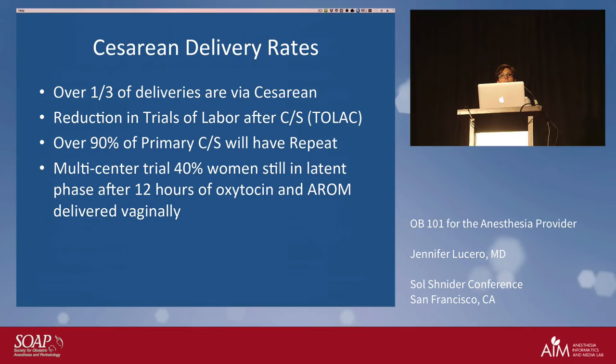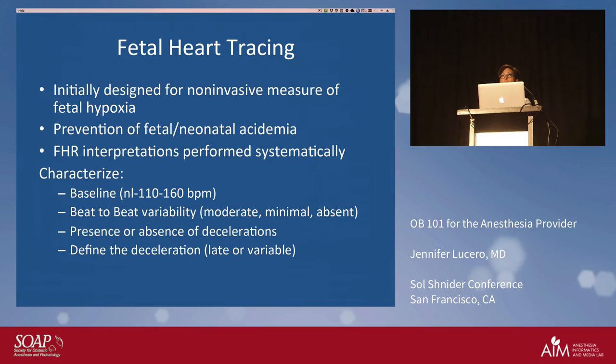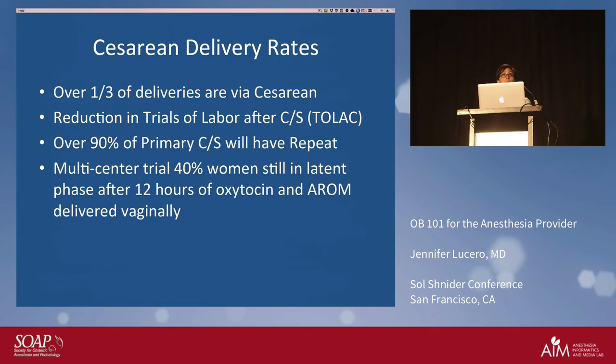Large retrospective studies put the uterine rupture risk at 0.5 to one percent. Mitigating strategies include double-layer closures, not offering TOLAC to women who had a classical incision into the active uterine segment or a T-incision — those rupture risks can reach nearly 10 percent — and maintaining continuous fetal heart rate monitoring, since there are signs of uterine rupture visible on the tracing.